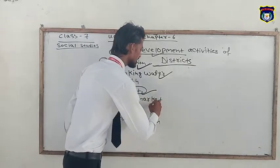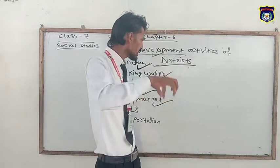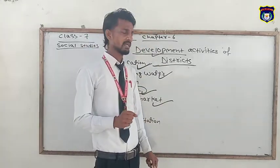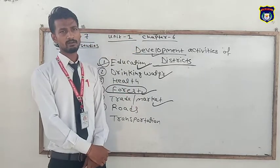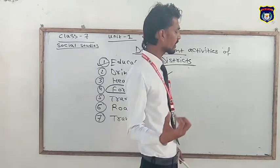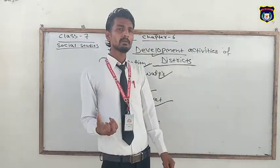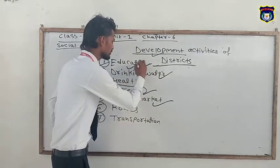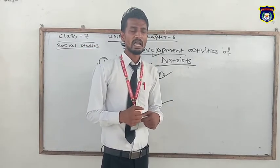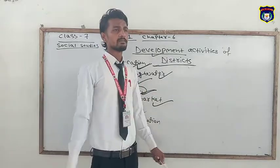Next one is trade and market. These are the places from which the government at the district, state, or central level collects tax. If trade and market are not developed and not fully brought up, then no country, area, district, or local level can be developed. Because to develop other sectors — education, drinking water, health, forest, or roads and transportation — the government needs money, and that money comes from tax obtained through trade and market.